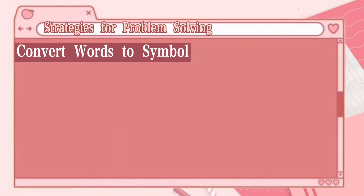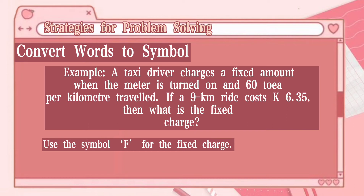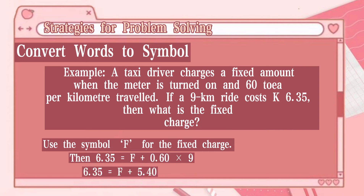The sixth strategy is to convert words to symbols. A taxi driver charges a fixed amount when the meter is turned on and 0.60 per kilometer traveled. If a 9-kilometer ride costs 6.35, what is the fixed charge? Using F for the fixed charge: 6.35 = F + 0.60 × 9. So 6.35 = F + 5.40, therefore F = 6.35 − 5.40 = 0.95.